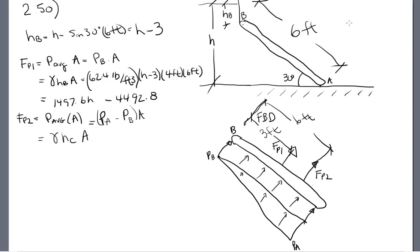And so this equals gamma water HC times A, where HC is right here, equals sine 30 degrees times 6 feet, which equals 3 feet. So this equals 62.4 pounds per feet cubed times 3 feet times 4 feet times 6 feet. And that equals 2246.4 pounds. That should be 4 feet. So that acts at the 4 foot mark.